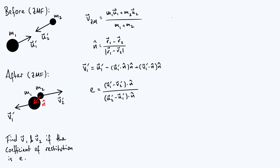To recap: we transformed to the zero momentum frame using vzm, established that the contact force acts in the n direction defined by the relative position vectors of the sphere centers, wrote v1 dash in terms of u1 dash with the tangential velocity unchanged, and derived the coefficient of restitution constraint. Our sub-goal is to determine v1 dash dot n so we can substitute it back into the expression for v1 dash.